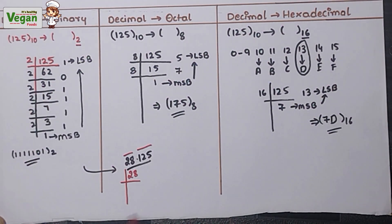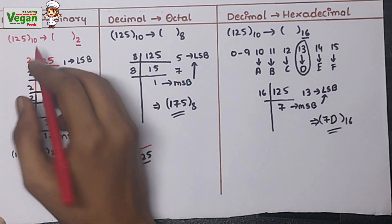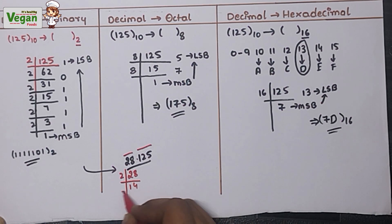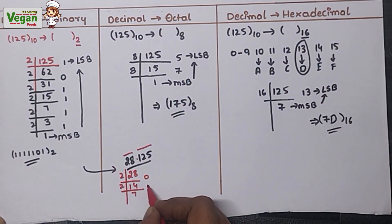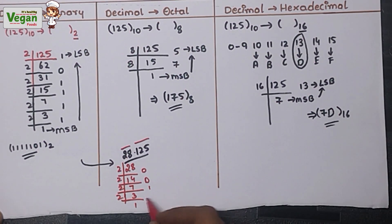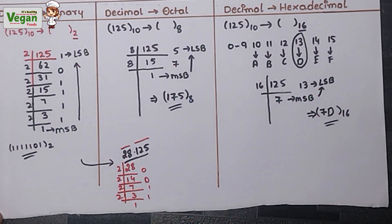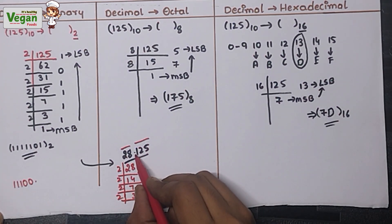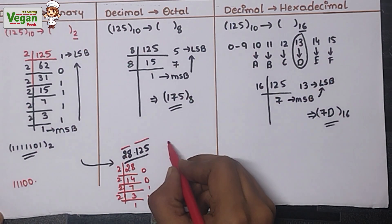Dividing 28 by 2: 2×1=2, remainder 0 for the first step; 2×7=14, remainder 0; 2×3=6, remainder 1; 2×1=2, remainder 1. Reading remainders from most significant bit to least significant bit, the binary value of 28 is 11100.